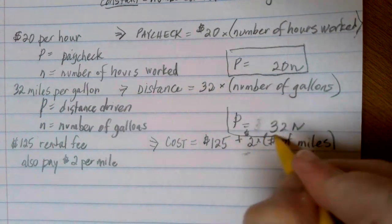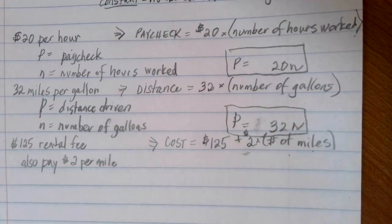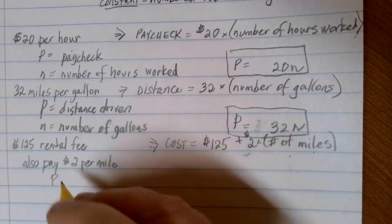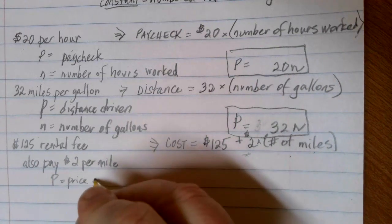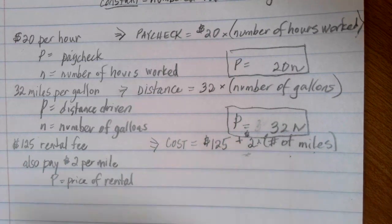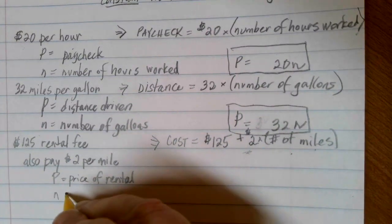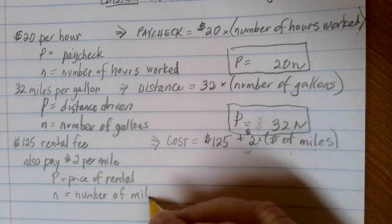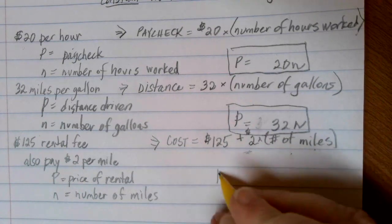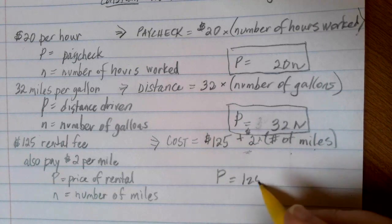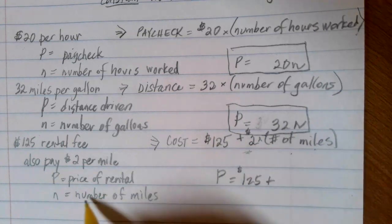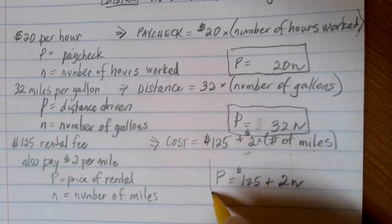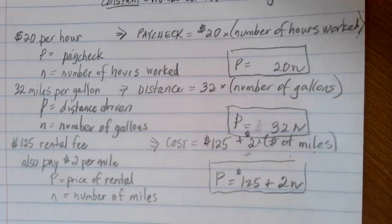Remember, a number and letter next to each other means multiplication. In our last example here, our P, what we're trying to find out and measure, is my price of rental for my moving truck. And my N is going to be the number of miles that I drive because there's an additional fee for that based on the number of miles. In this case, my price of my rental is equal to that flat fee of $125 plus $2 for every mile that we travel, so we call that 2N. And I have this equation here.